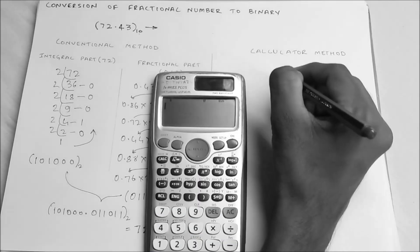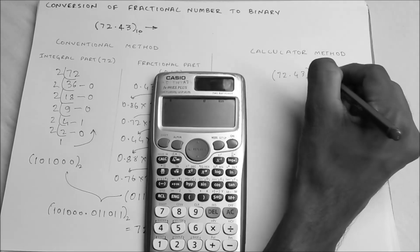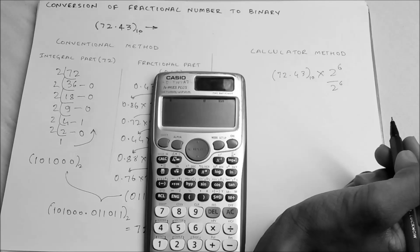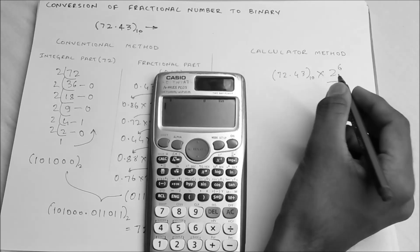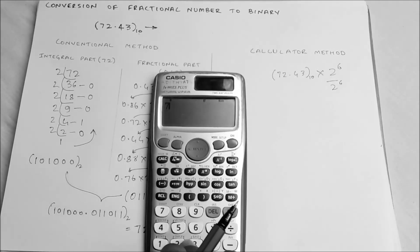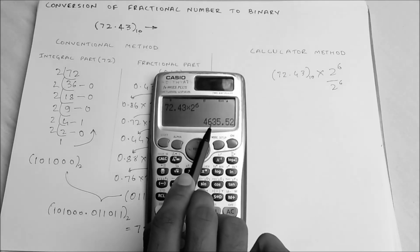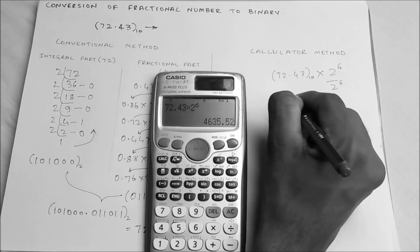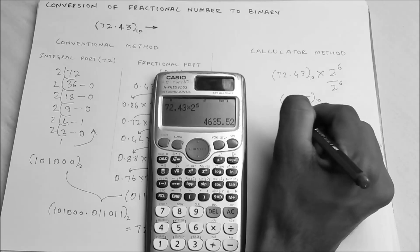In this method, you take the number 72.43 base 10 and multiply and divide it by 2 to the power of 6. Since the value of the number doesn't change when you multiply and divide by the same number, first let's calculate the numerator: 72.43 × 2^6. We get 4635.52, so we approximate the numerator as 4635. So we write 4635 base 10 divided by 2 to the power of 6.